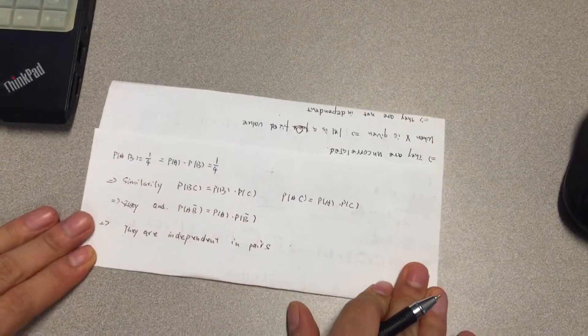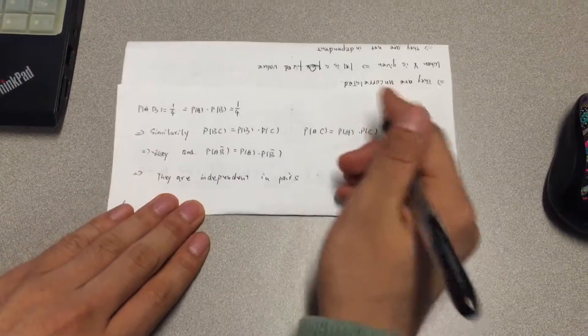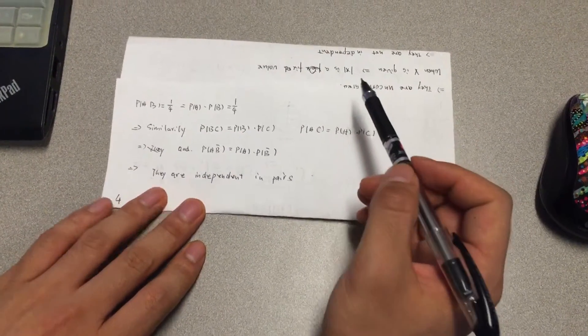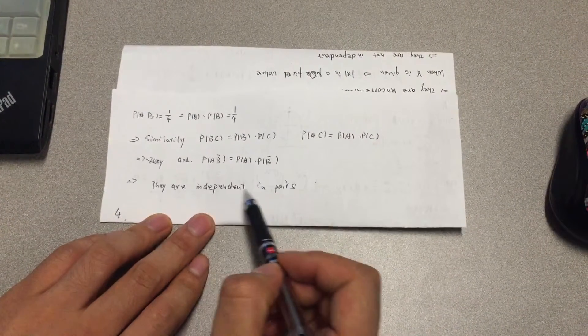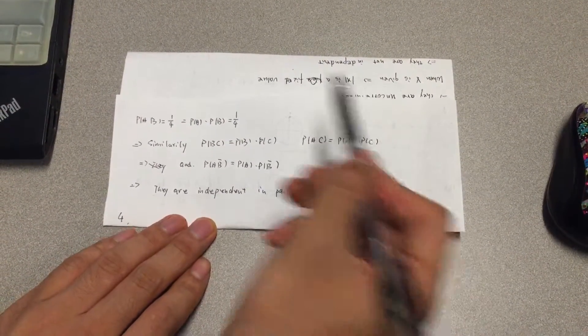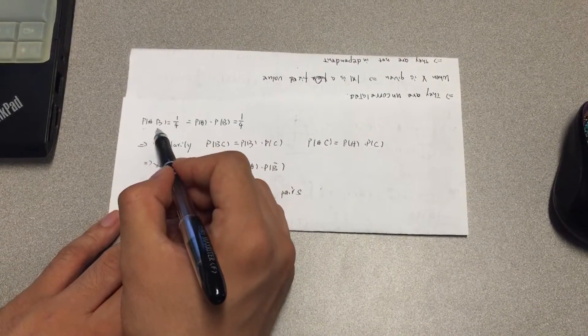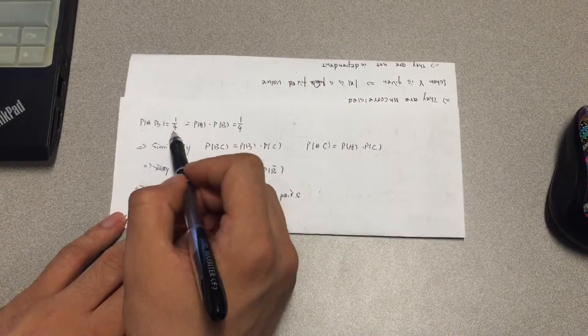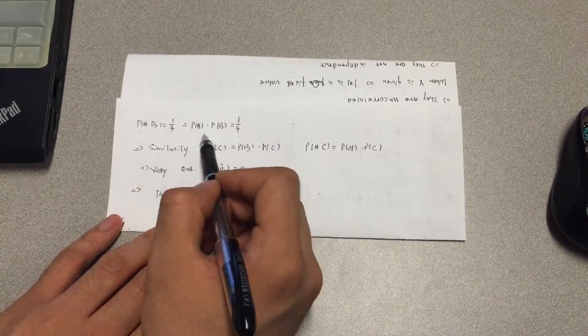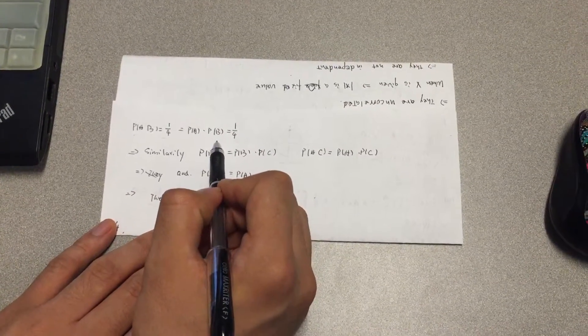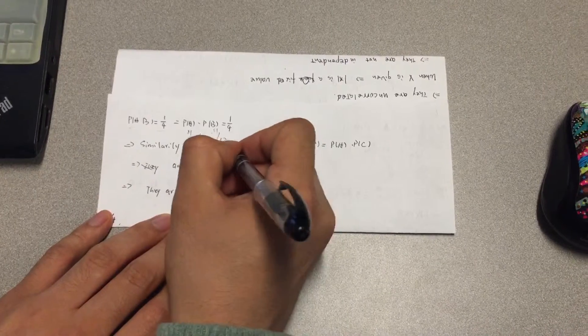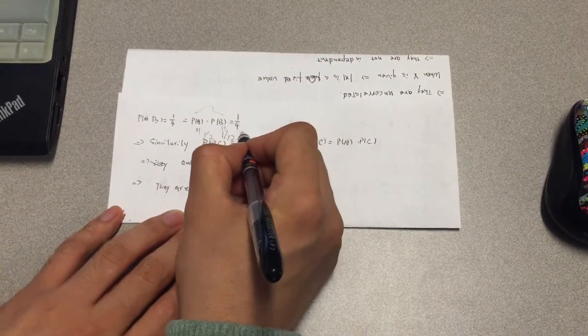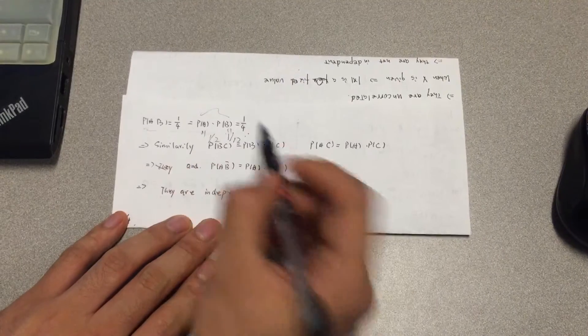In question 2, we need to prove that A, B, C are independent in pairs. As we know, P(A∩B) equals 1/4, and P(A) and P(B) equal 1/2 and 1/2. The product of these two is 1/4, so this equation is right.